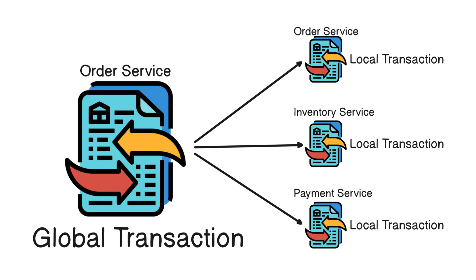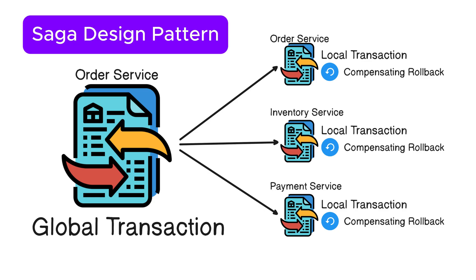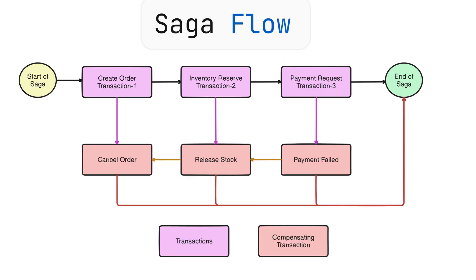If something goes wrong, whatever transaction was completed locally can either be rolled back or a compensating action can be triggered to undo its effects. This is exactly the idea behind the Saga design pattern. Instead of relying on a single global transaction spanning across multiple services, Saga breaks the process into a series of local transactions, each handled by a single service. If one step fails, the previously completed steps are undone through compensating logic — not by rolling back the entire distributed transaction, but by taking appropriate counteractions like releasing stock, refunding the payment, or cancelling the order.